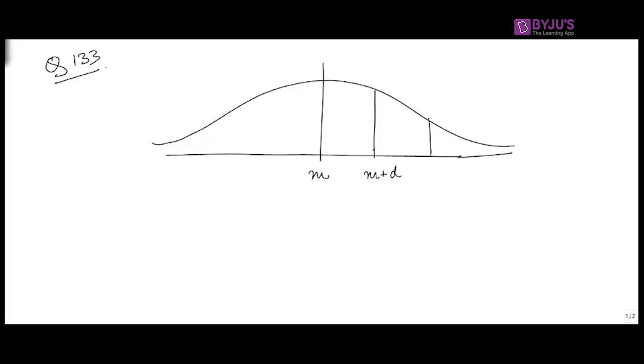On this side M minus D and M minus 2D. Also, since it's a normal distribution, the percentages are fixed: 34% here, 34%, 14% here, 2%, 14%, and 2% here.